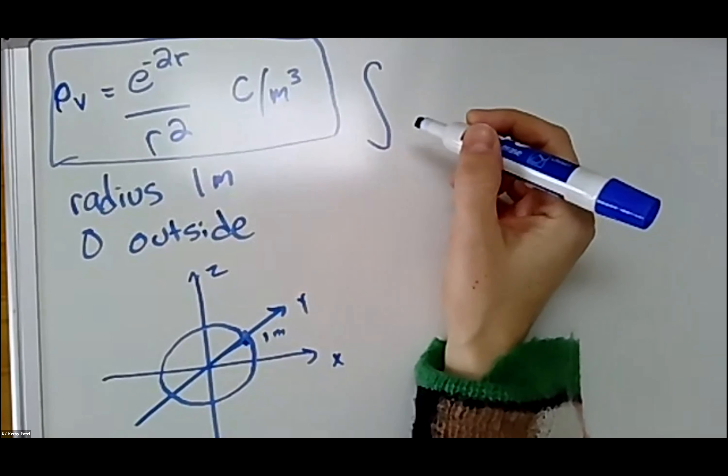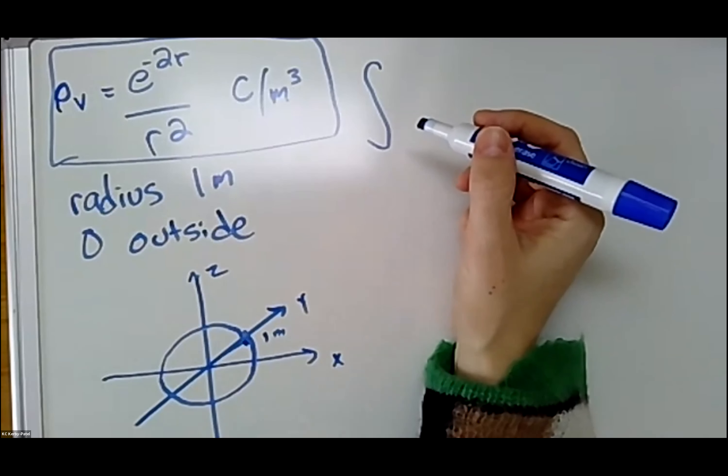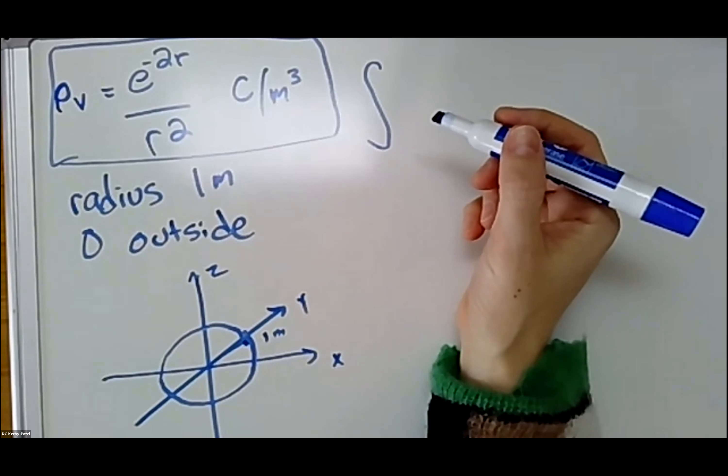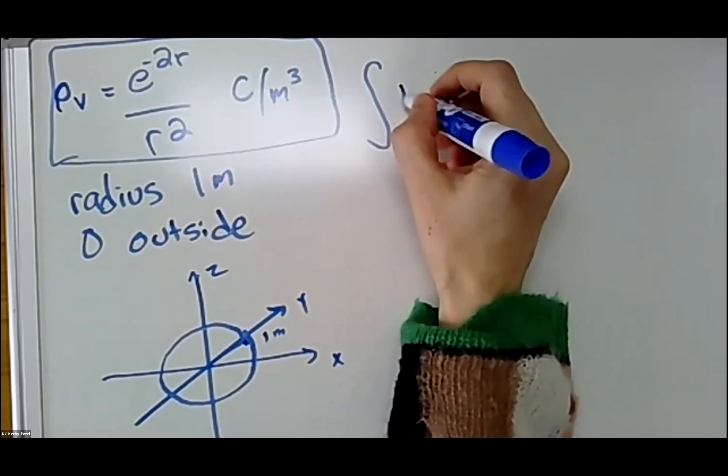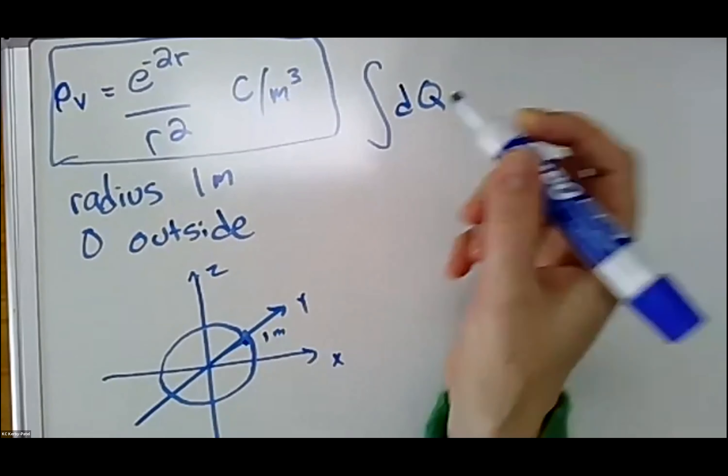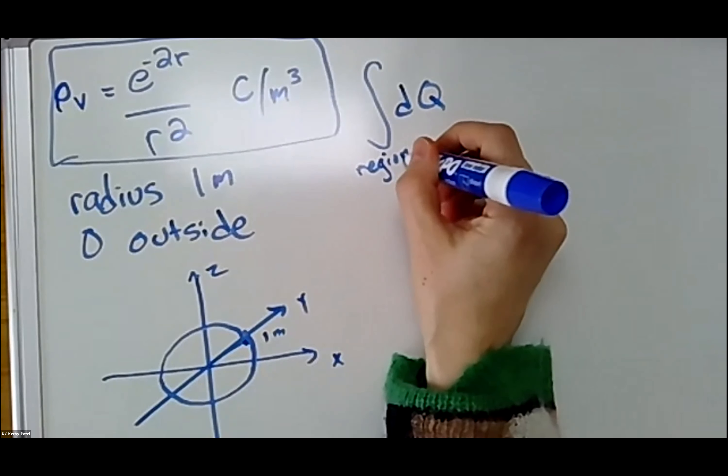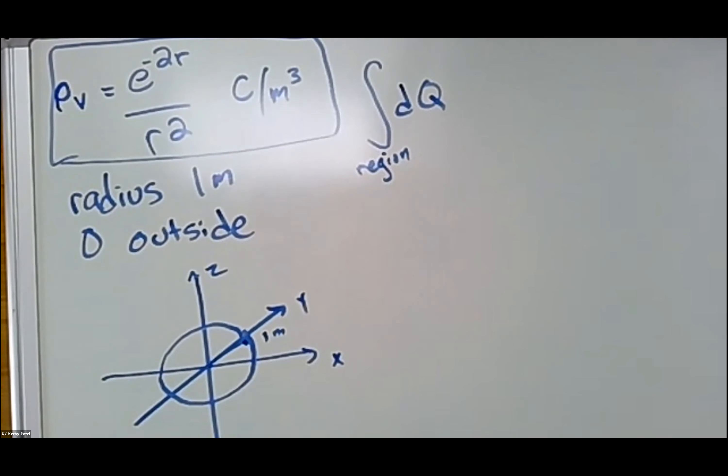Here's how we're going to do it: we have to do an integral. At the most basic level, with no additional information or substitution involved, we just have to do the integral of dQ over the region that contains the charge. But we have more information than that.